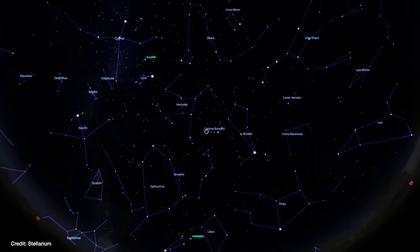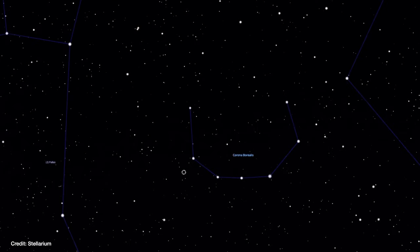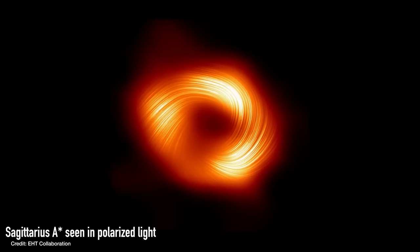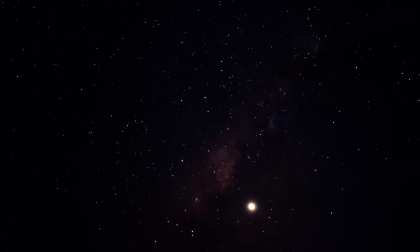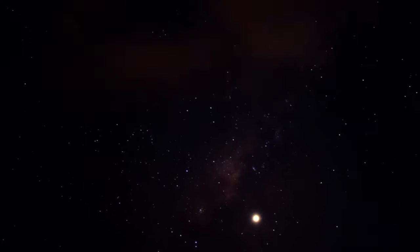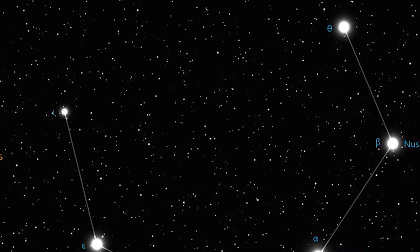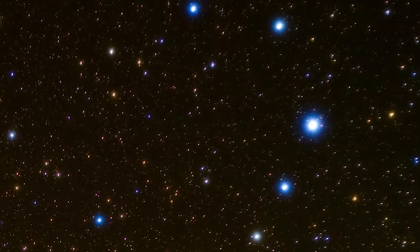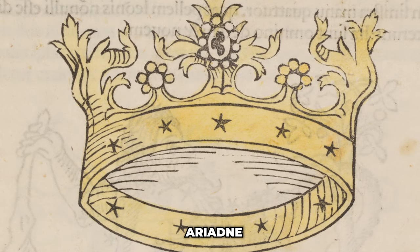Coronae Borealis, also known as the Northern Crown, is a small constellation located in the northern sky. It's one of the 88 recognized constellations and holds a rich history and mythology. The name Coronae Borealis is derived from Latin, where Coronae means crown and Borealis means northern. This constellation represents the crown worn by Ariadne in Greek mythology.